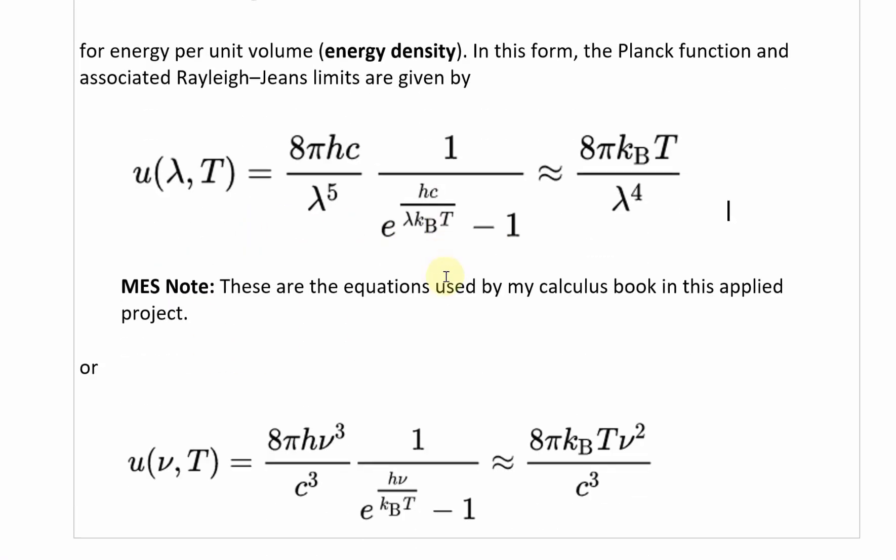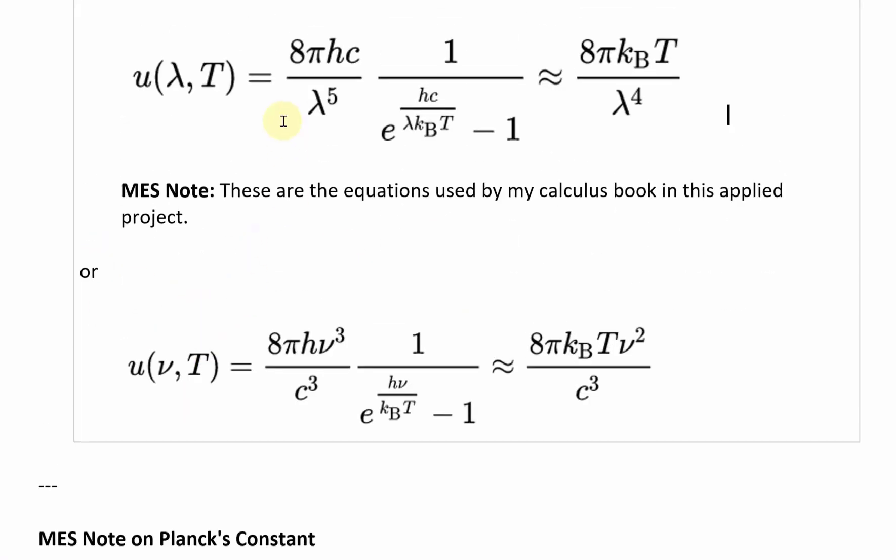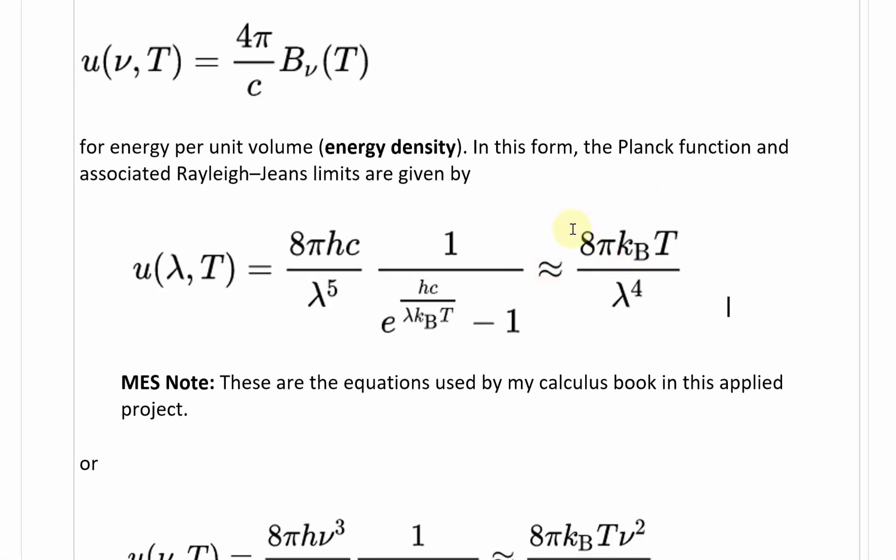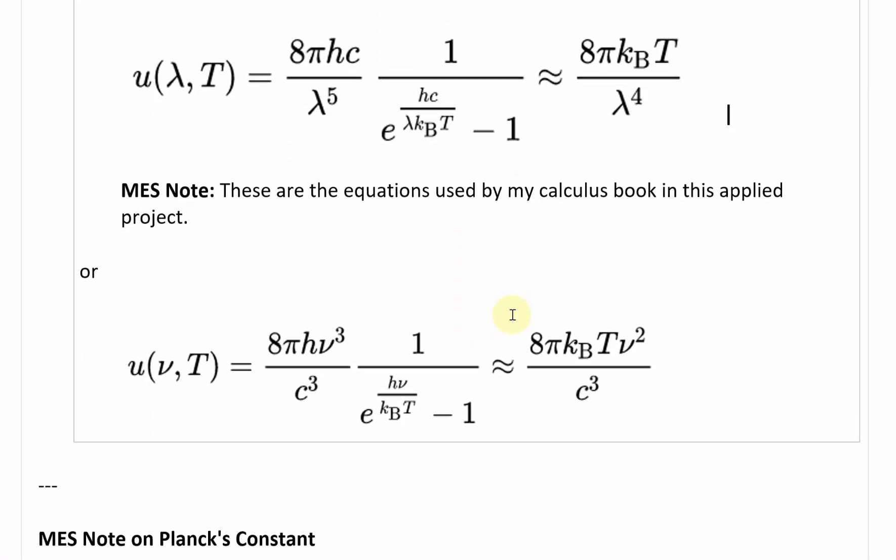You can also write this in terms of frequency instead of wavelength, and this is the equation. u(ν,T) equals 8πHν³ divided by C³, and then times it by 1 over e^(Hν/KbT) minus 1. This is approximately equal to, when you simplify it to reduce it into Rayleigh-Jeans law, you get 8πKbTν² divided by C³.